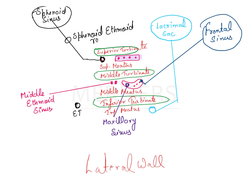We will start from the ethmoid sinus. The ethmoid sinus openings or air cells are present in both the superior meatus and the middle meatus. In the superior meatus, you will find the posterior ethmoid sinus opening.